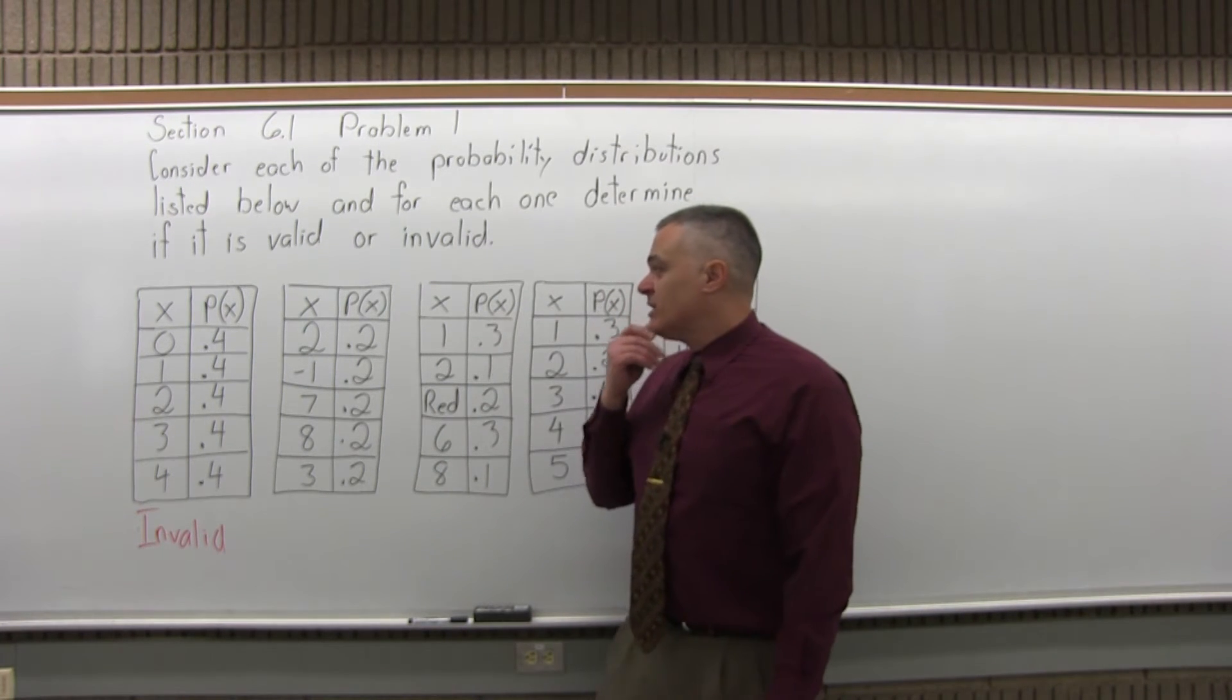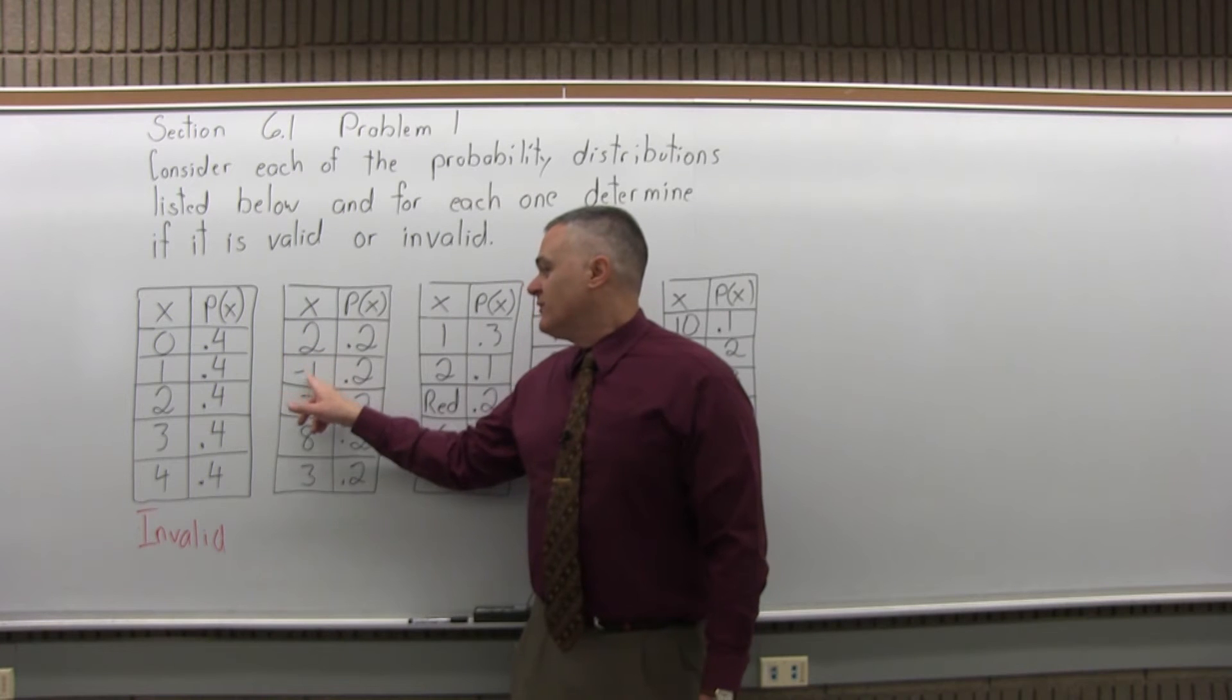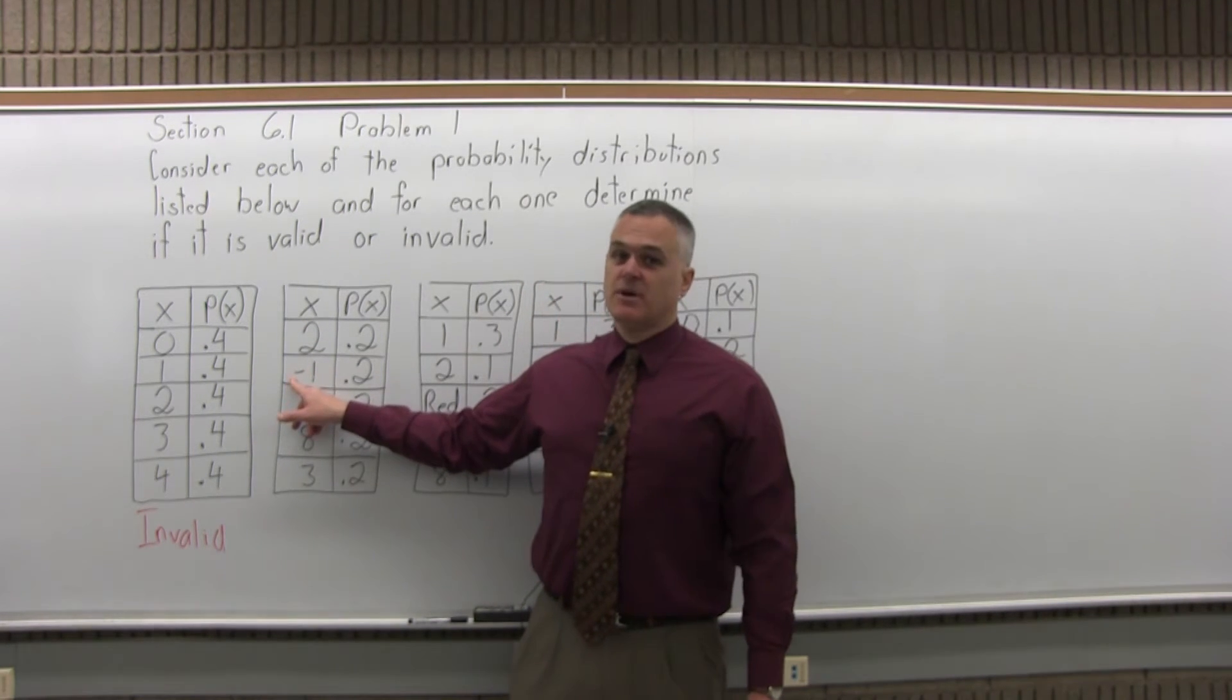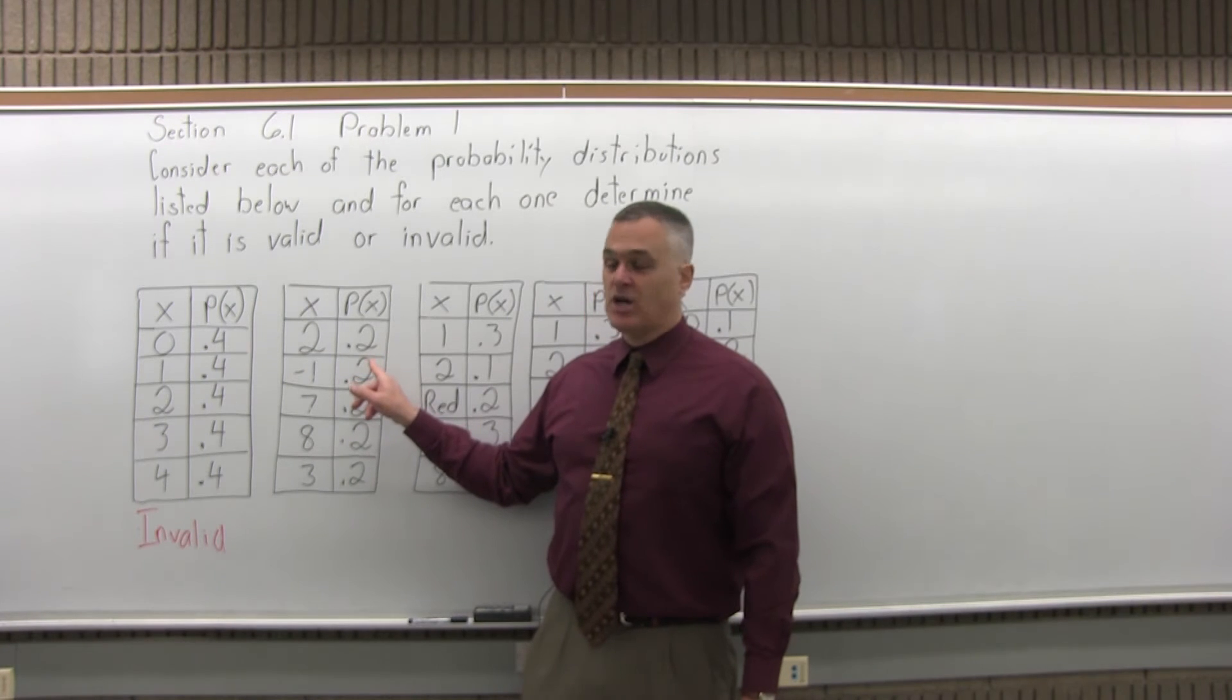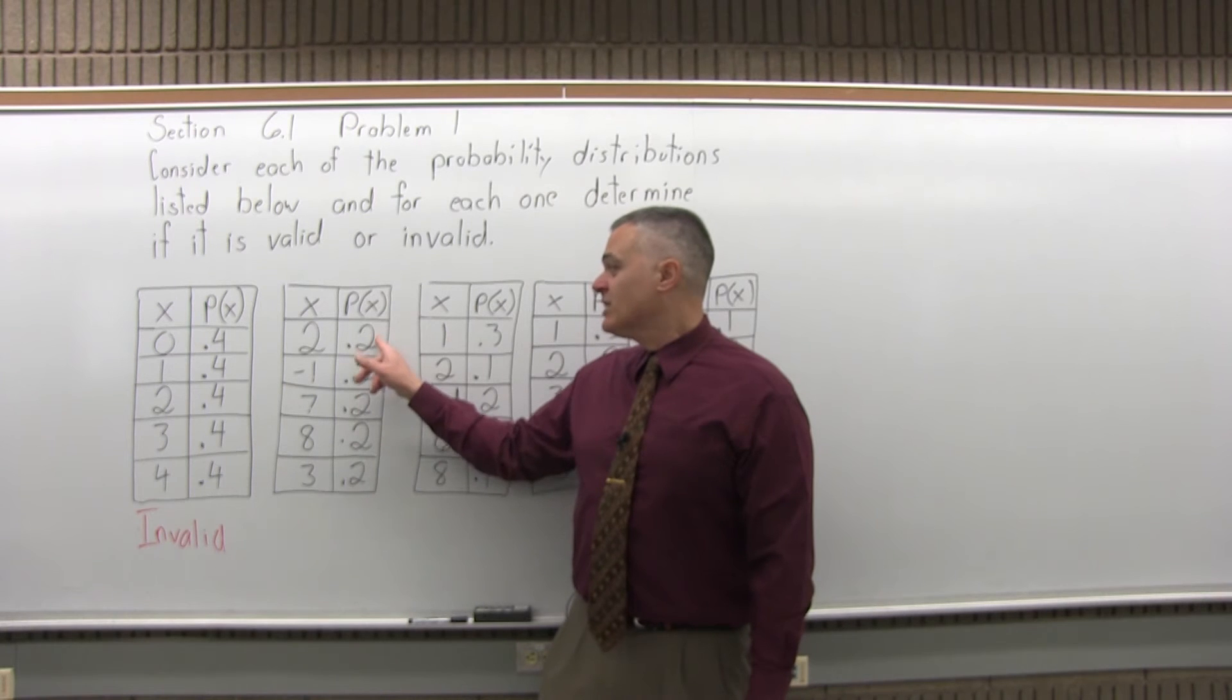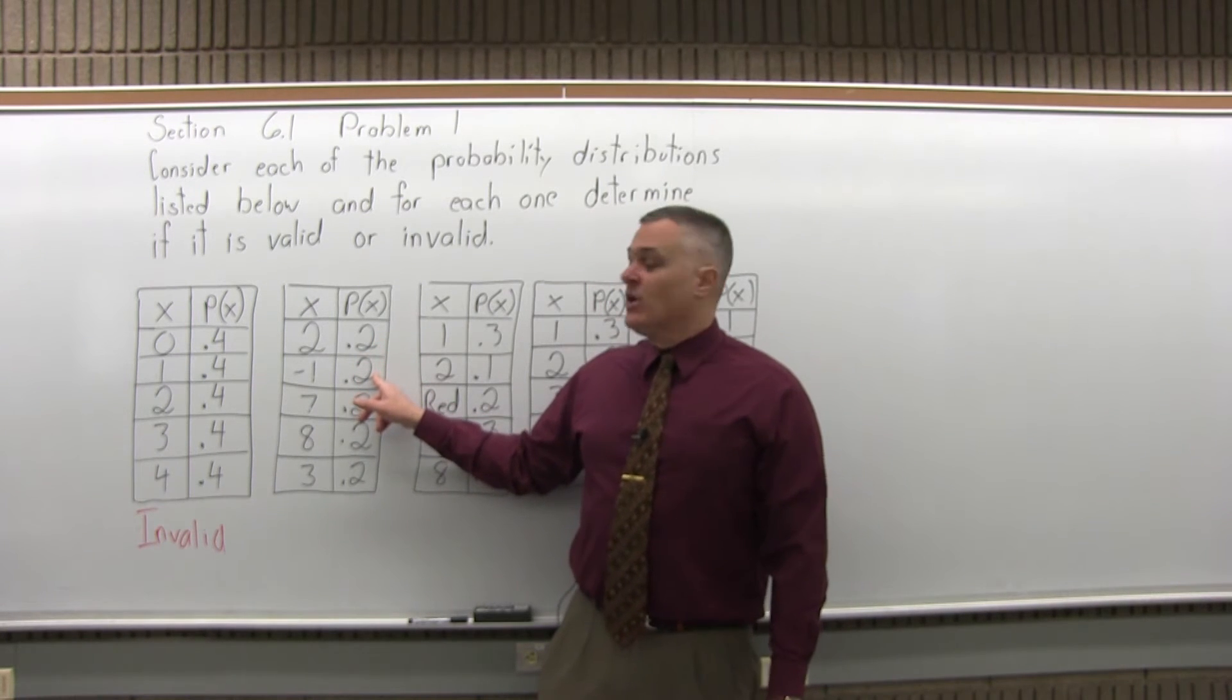Now, the second probability distribution, everything in the first column is a number. Notice you have a negative here? That's okay, it's a number. You can't have a negative in the second column. The second column, everything is between 0 and 1. That's good. And if you get a total of the second column, the total is 1.